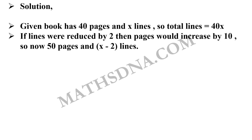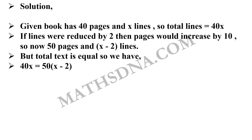Secondarily, if the lines were reduced by 2, then the pages increase by 10, which means the total pages will now be 50 and the number of lines on each page will be X minus 2. As the text is identical, we have 40X equals 50 into (X minus 2), which implies 40X equals 50X minus 100.